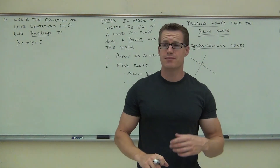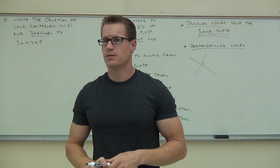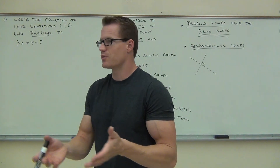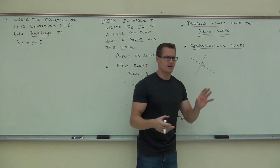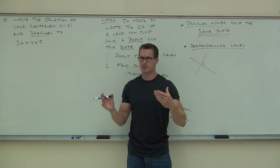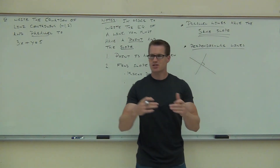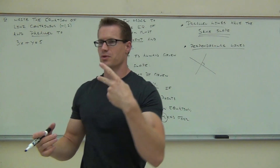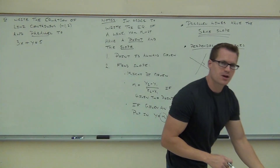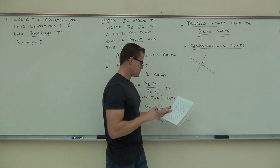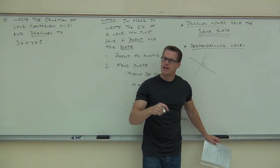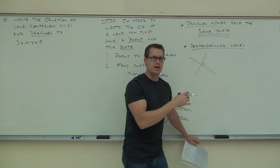Are perpendicular lines going to have the same slope? No. If they were parallel, they would have the same slope — but perpendicular lines can't have the same slope. They're going to be like opposites, but not just opposites: they're also reciprocals. To find perpendicular slopes, we look for slopes that are negative reciprocals of each other. So perpendicular lines have slopes which are negative reciprocals.